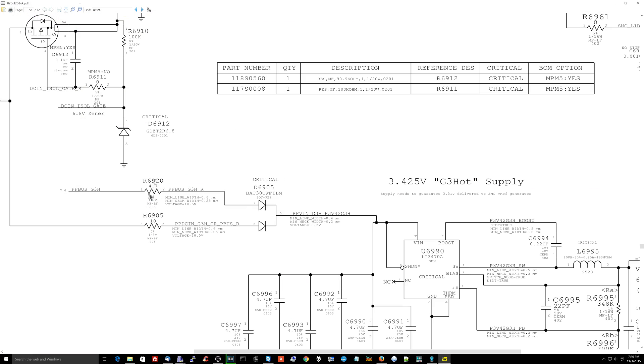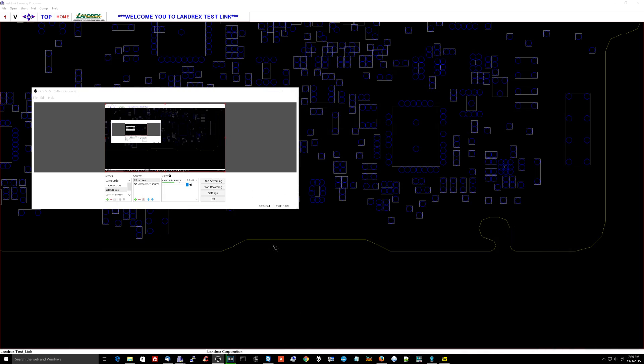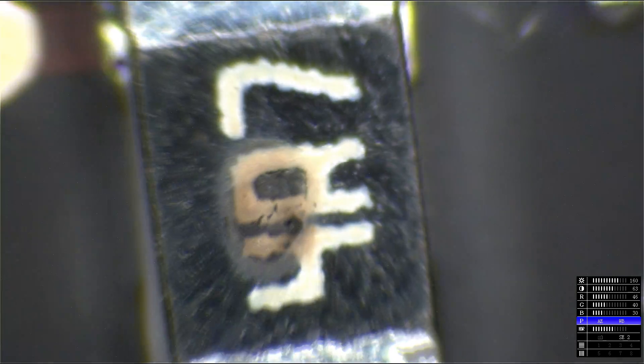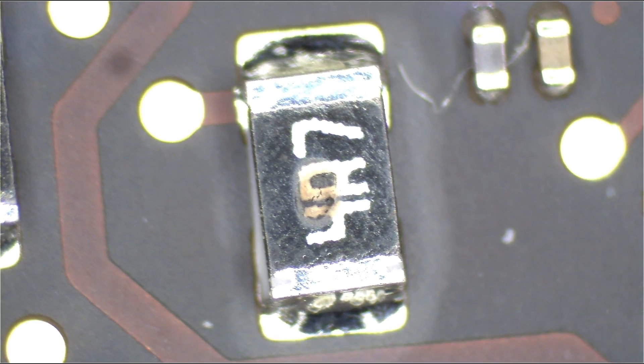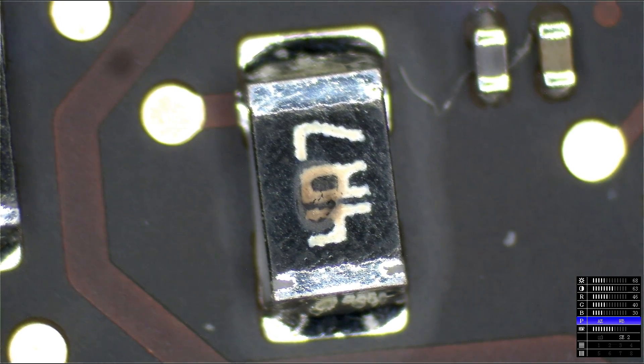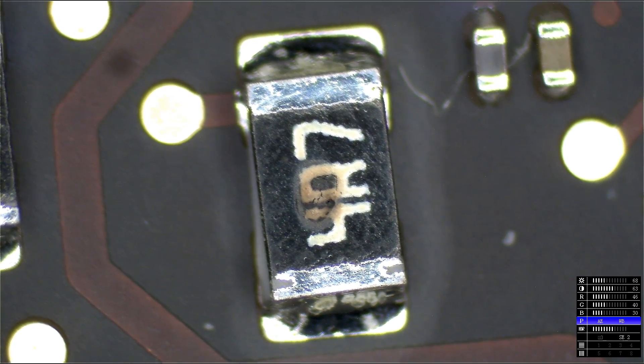This over here is the resistor from the charger. Now let's look at this one, R6920. R6920 is going to be the one right next to it. See that? That's nasty. That's gross. Fuck that thing. So we're going to get rid of that.